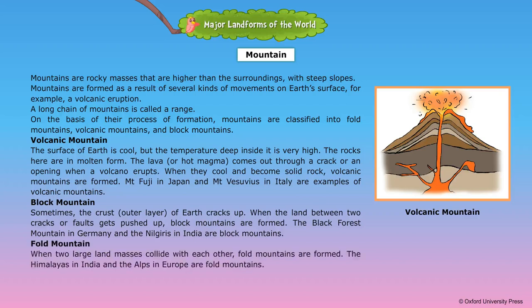Fold Mountain. When two large land masses collide with each other, fold mountains are formed. The Himalayas in India and the Alps in Europe are fold mountains.